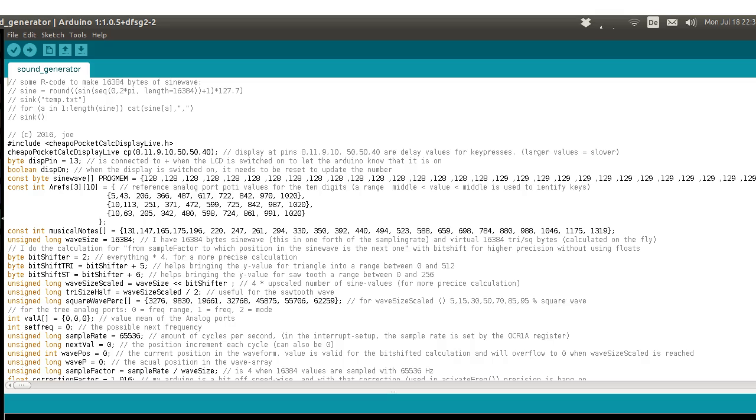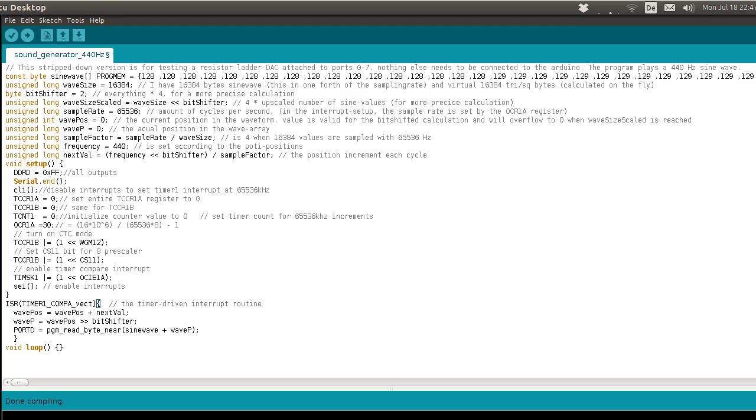You can find the software and the schematics on my Hackaday page. You can also find a stripped down version of the software that only creates a 440 Hz sine wave. You can use this program to test a resistor ladder DAC on a naked Arduino, with no pots or anything attached.